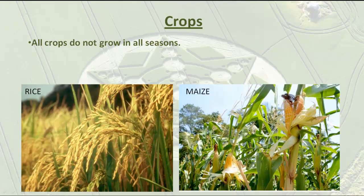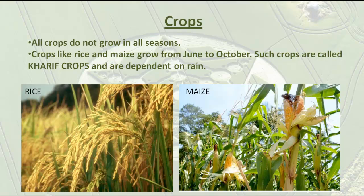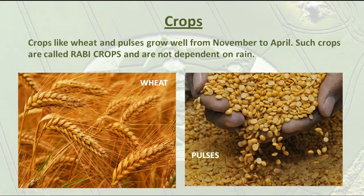All crops do not grow in all seasons. Crops like rice and maize grow from June to October — such crops are called kharif crops and are dependent on rain. Crops like wheat and pulses grow well from November to April — such crops are called rabi crops and are not dependent on rain.